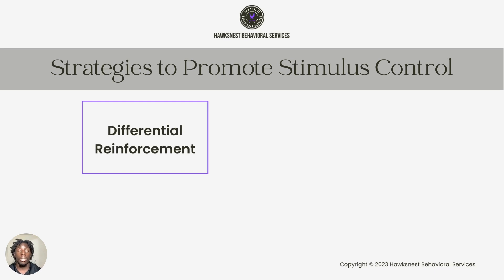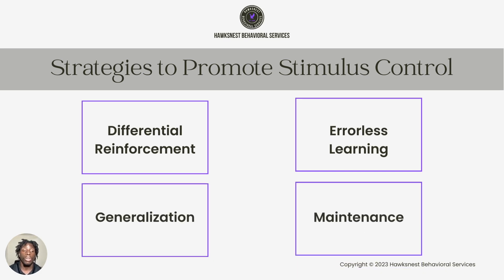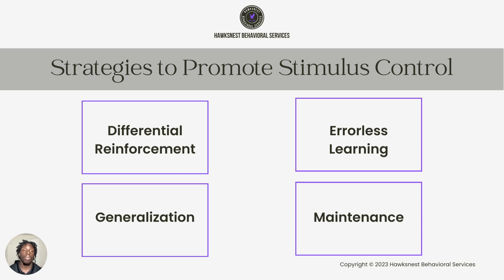Some strategies to promote stimulus control transfer include differential reinforcement, errorless learning, generalization, and maintenance. With differential reinforcement, we reinforce the replacement behavior and extinguish the targeted behavior. With errorless learning, we make it so our learner is not making mistakes during the teaching process or as we're working on stimulus control transfer — we immediately provide assistance or a cue so they're giving us the correct response each time. Generalization means making sure they're coming in contact with different forms and variations of the target early and often.